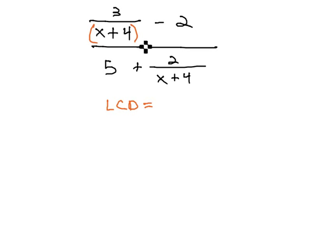In this problem, there is only the one denominator of x minus 4. I'm sorry, x plus 4, and so that's what we will multiply each fraction by, or each term by.